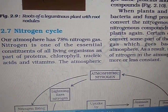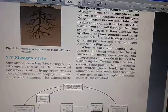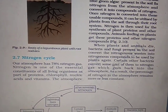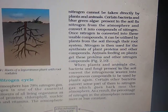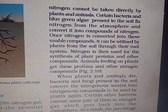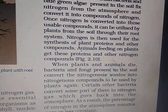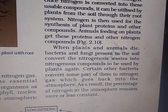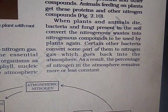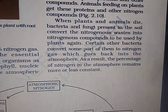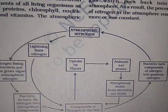The atmosphere maintains 78% nitrogen because of this cycle. We cannot take nitrogen directly from the air, so through this process humans and animals obtain nitrogen, which is essential for formation of proteins, chlorophyll, nucleic acids, and vitamins. Certain bacteria and blue-green algae in the soil fix nitrogen into usable form for plant proteins. When plants and animals die, bacteria and fungi in the soil convert the nitrogenous waste to be used by plants again. Denitrifying bacteria convert some part back to nitrogen gas, keeping the percentage constant.